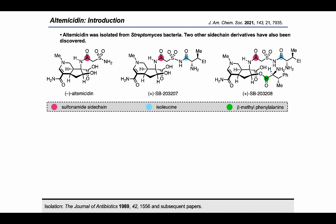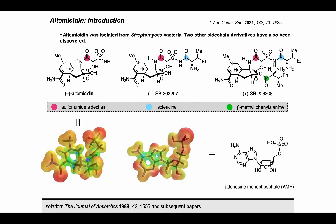Preliminary medicinal chemistry work at SmithKline Beecham Pharmaceuticals showed that semi-synthetic modifications of natural altemicidin to append other amino acid side chains to the natural sulfonamide moiety conferred some specific inhibition of the respective tRNA synthetases. These findings support the hypothesis that altemicidin and its derivatives may act as aminoacyl adenosine monophosphate nucleotide mimics.